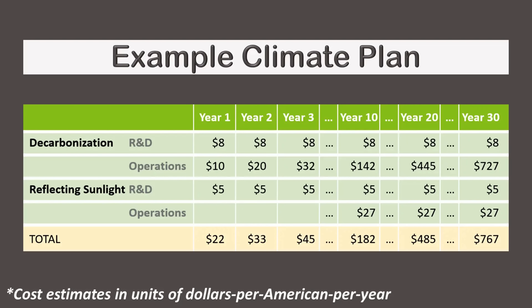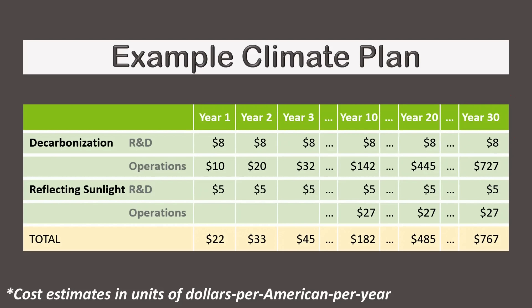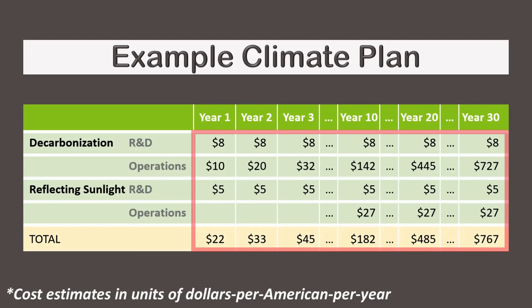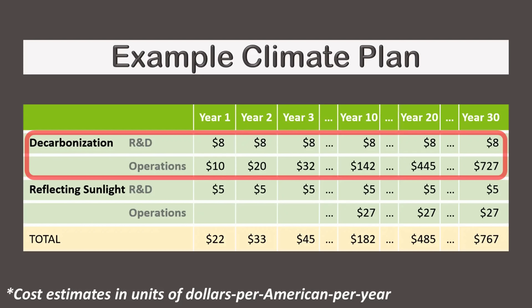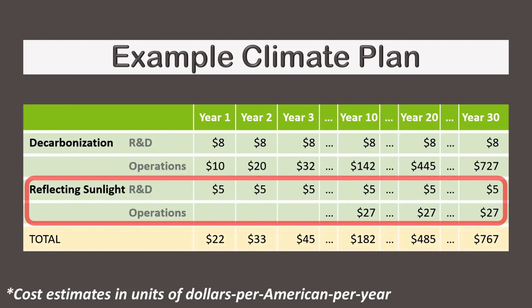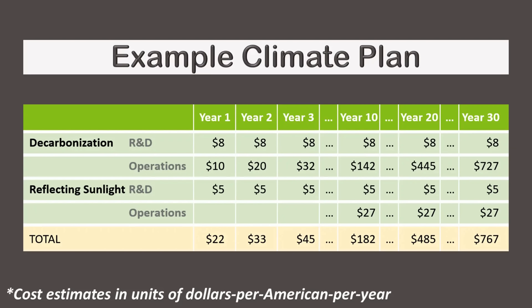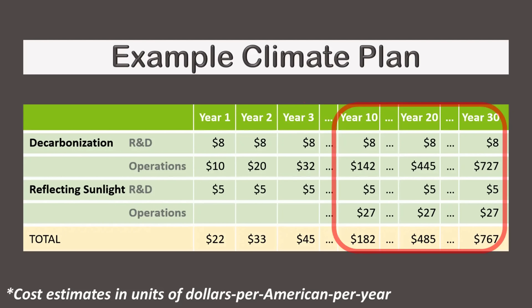In this table, years are shown in columns and values are in units of dollars cost per American per year. The first two rows cover decarbonization, while the last two rows focus on reflecting sunlight. The left side shows the early years, while the right side shows the later years.